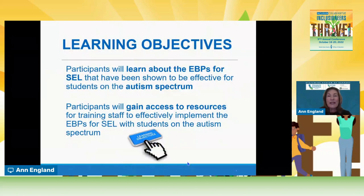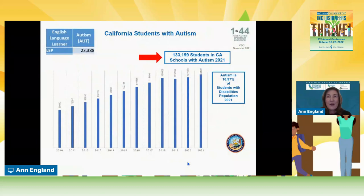Your learning objectives: my goal is to make sure you learn about the evidence-based practices for social-emotional learning that have been proven effective for students on the autism spectrum, and then to gain access to free resources for training staff to effectively implement these EBPs for social-emotional learning with students on the autism spectrum.